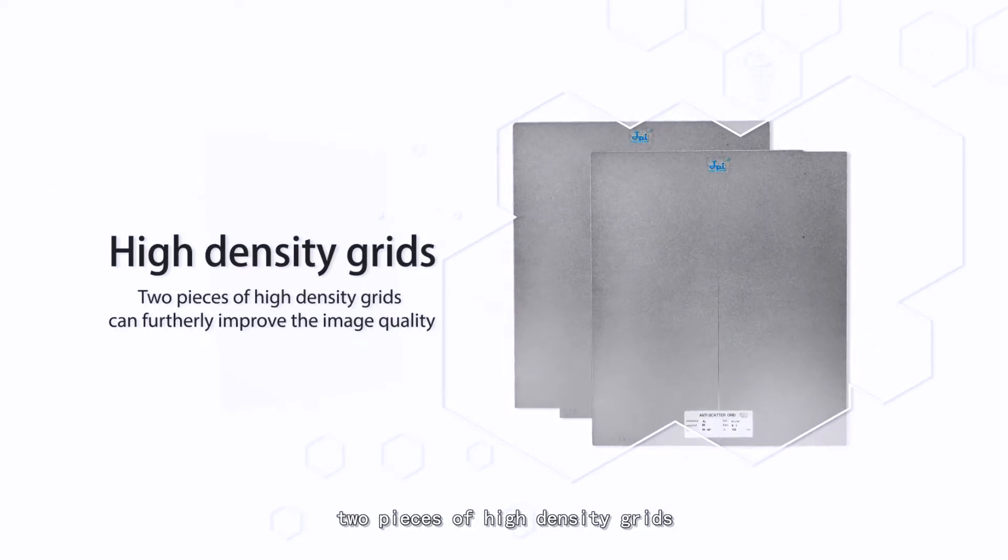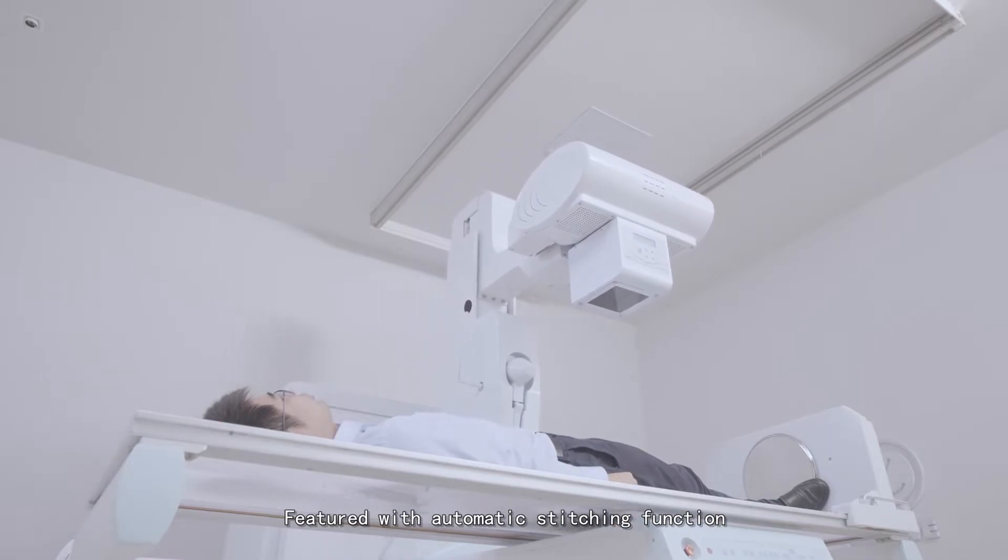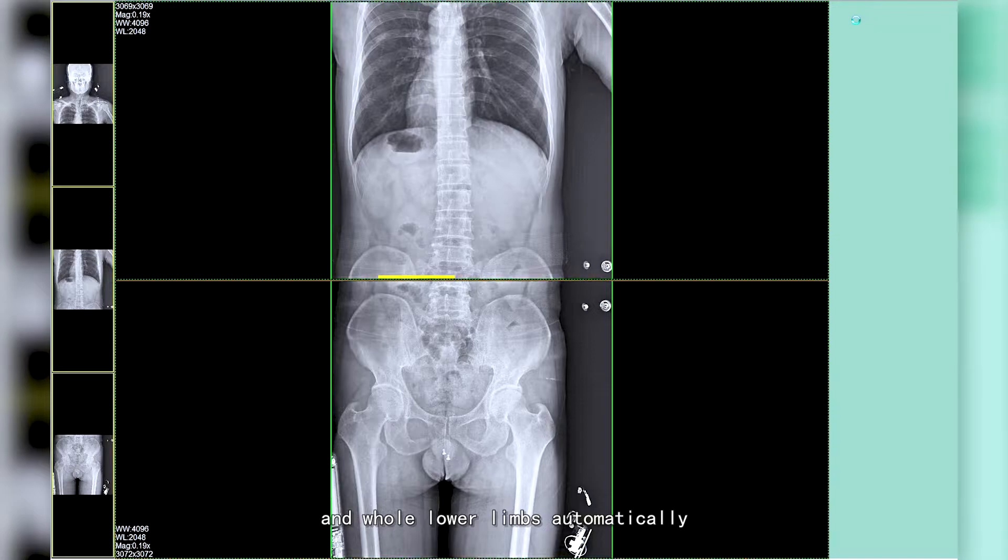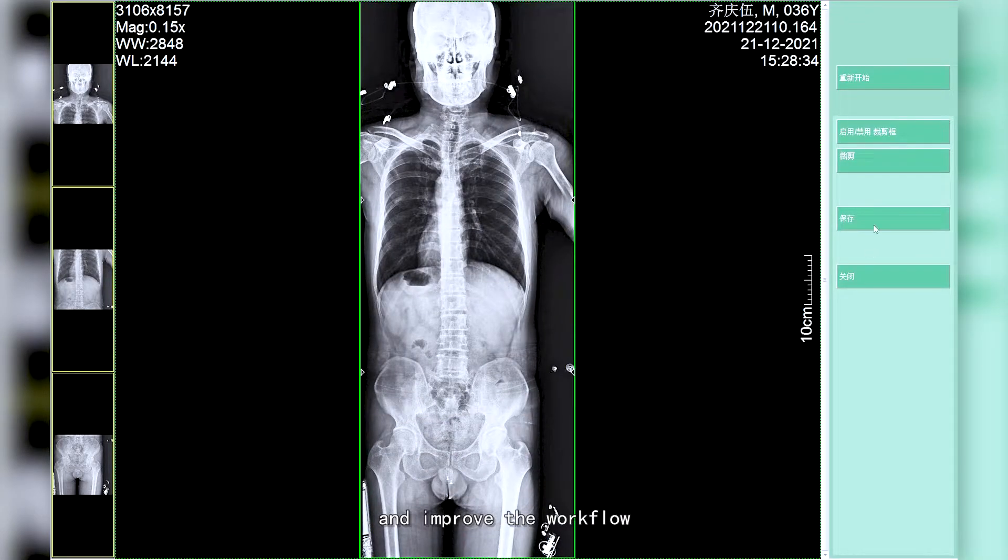Besides that, two pieces of high-density grids can further improve the image quality. Featured with automatic staging function, it can produce an intact image for whole spine and whole lower limbs automatically, making doctors' work easier and improving the workflow.